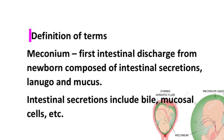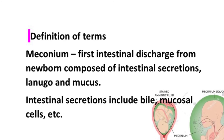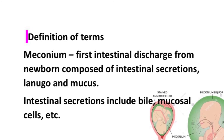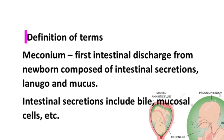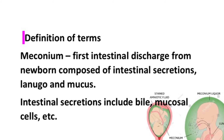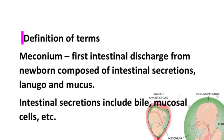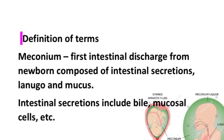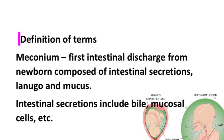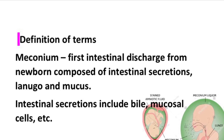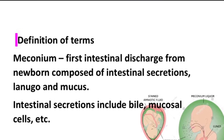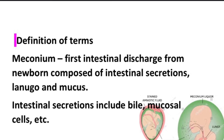First, definition of terms. Meconium is the first intestinal discharge from newborns. It is normally composed of intestinal secretions such as bile, mucus, lanugo, and mucosal cells.